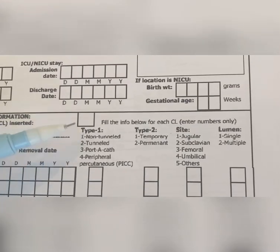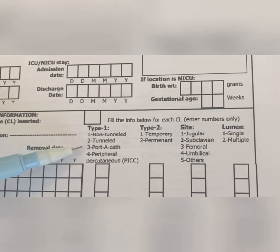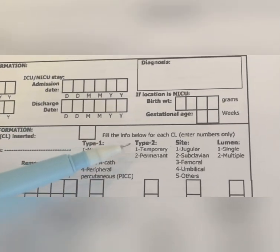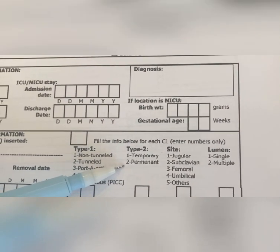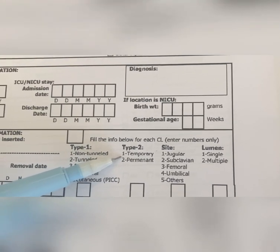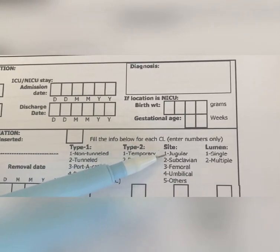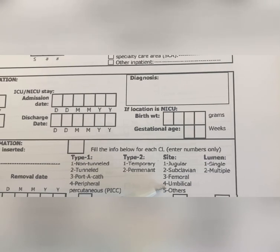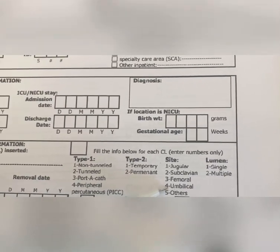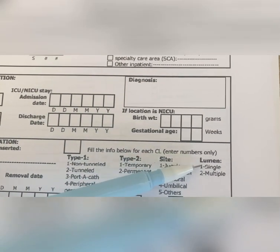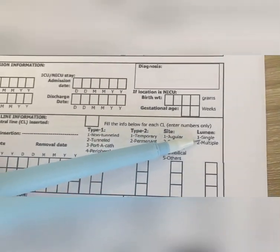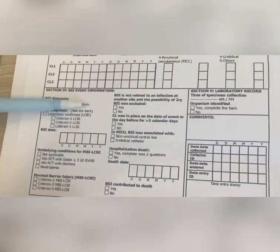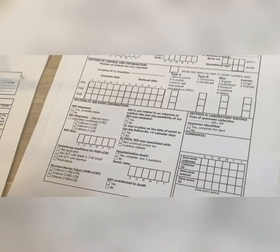Indicate if the central line is non-tunneled, tunneled, portable, peripheral, percutaneous, or PICC. Then type — whether temporary or permanent. In our hospital we use temporary umbilical catheters. For site: jugular, subclavian, femoral, umbilical, or others — in our hospital we mostly use umbilical for neonates. Then indicate lumen: single or multiple — we use single lumen. Section four is for the infection control department or doctor if a bloodstream infection is diagnosed.